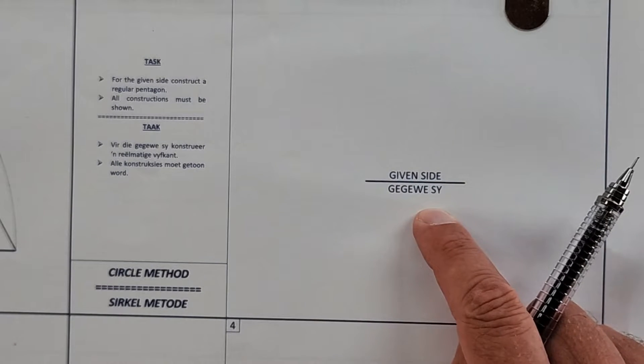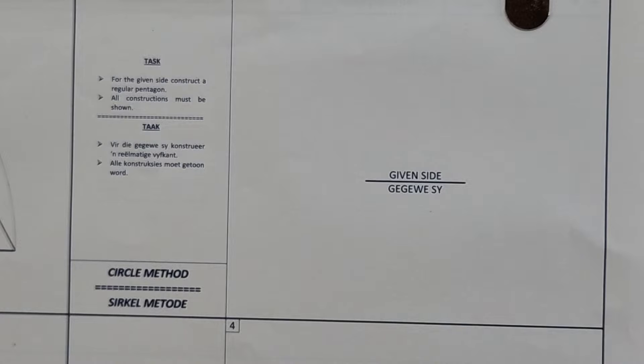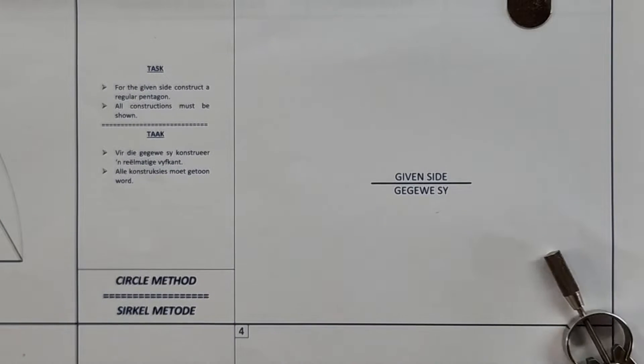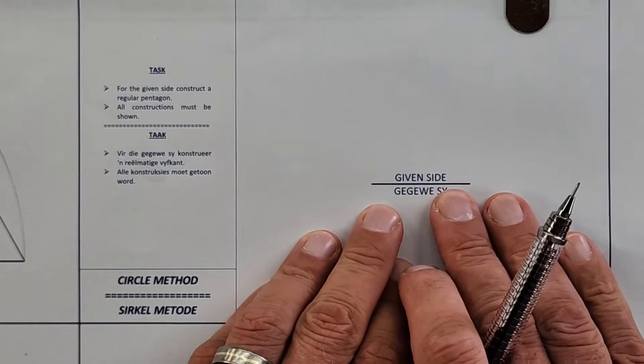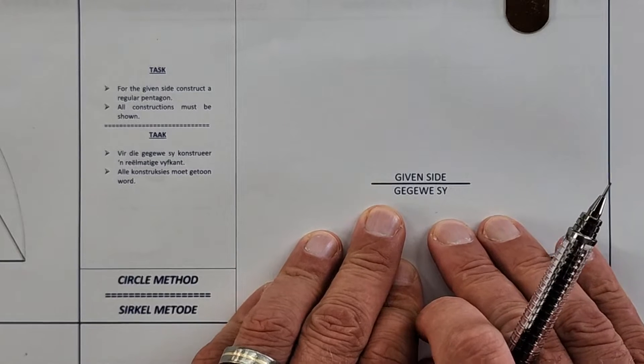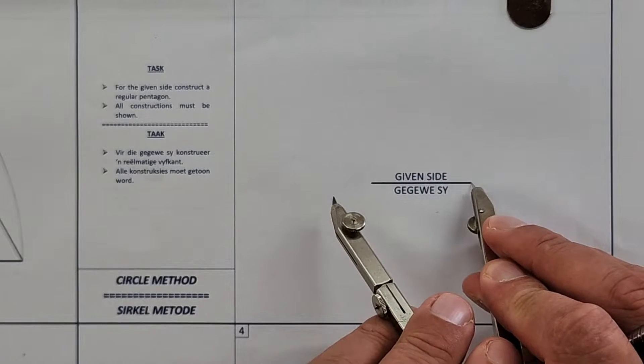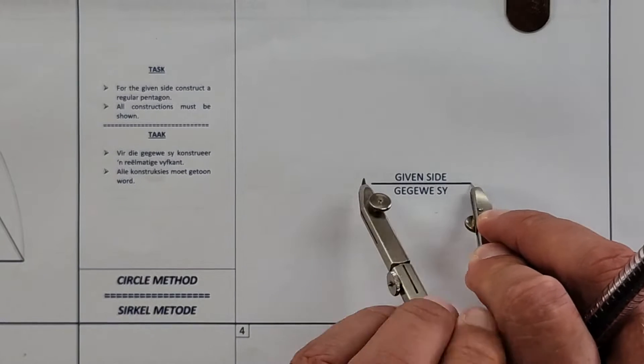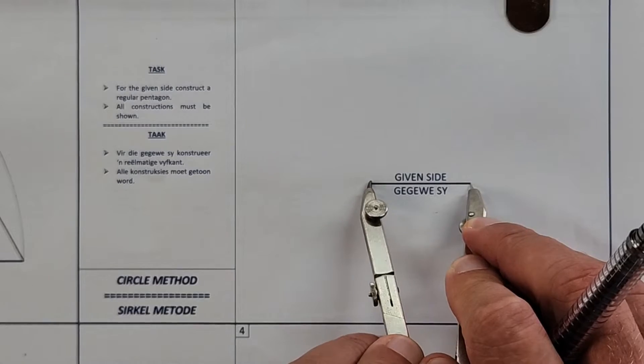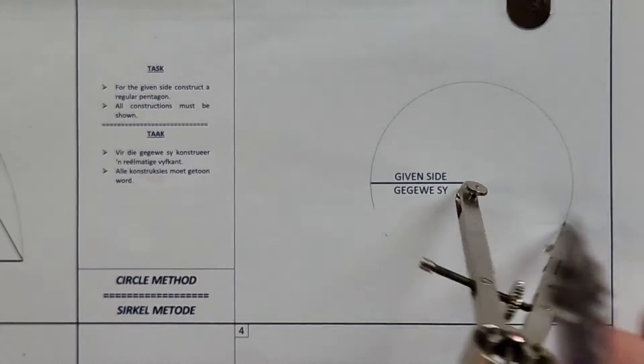you will draw a hundred pentagons between now and the end of this year, and it's important for you to get the understanding right of what is the way of constructing it. Now, of course, I'll be showing you many different ways, but here is probably one of the easiest ways. Alright, so what you're going to do again, just like the first one, set that compass on the base, and draw a full circle in construction.